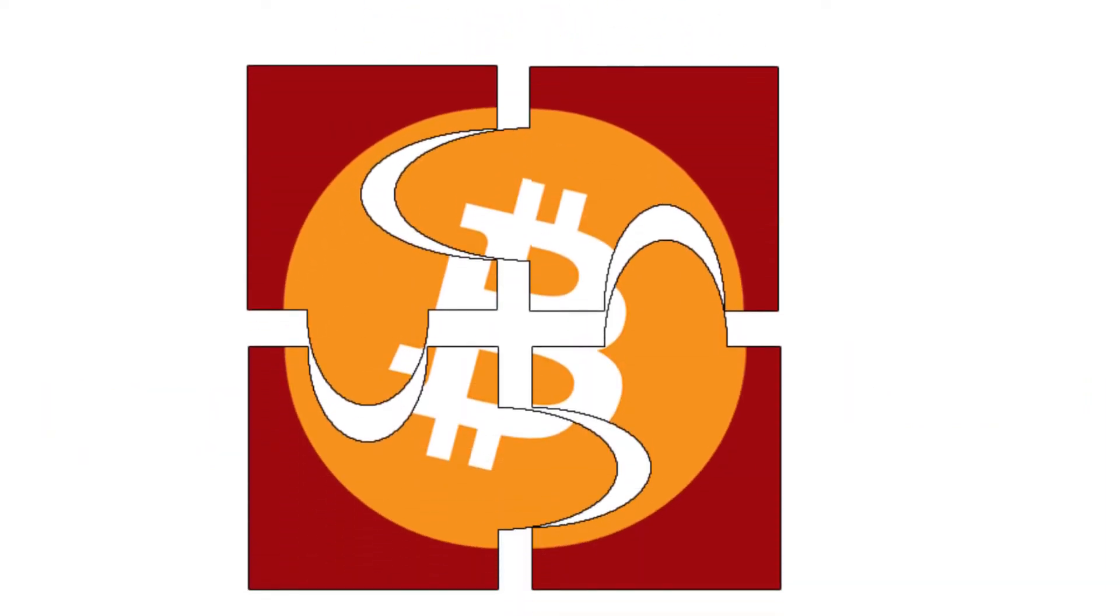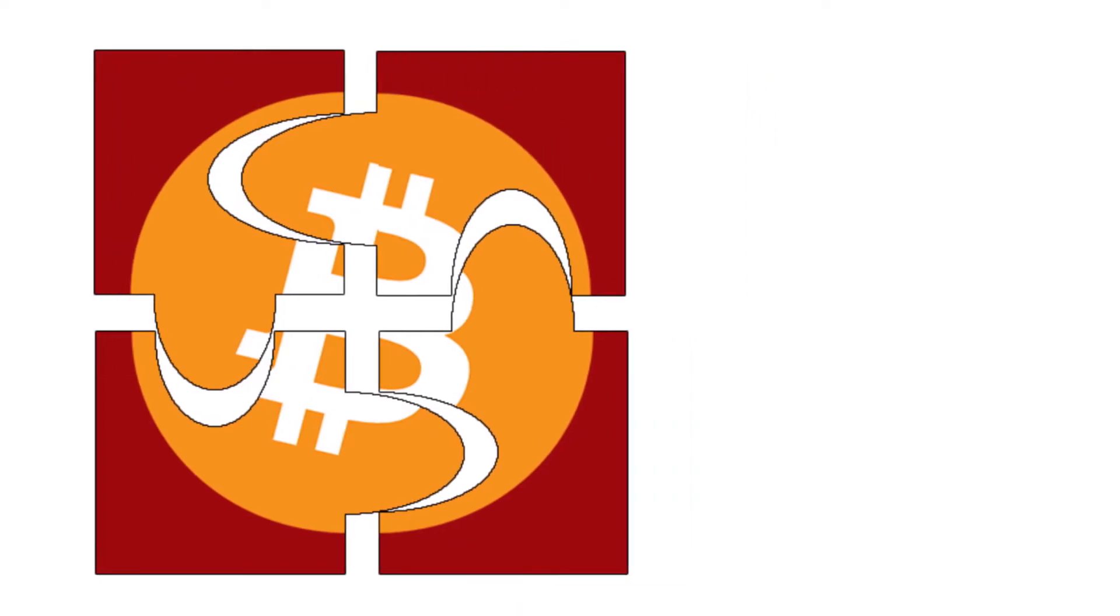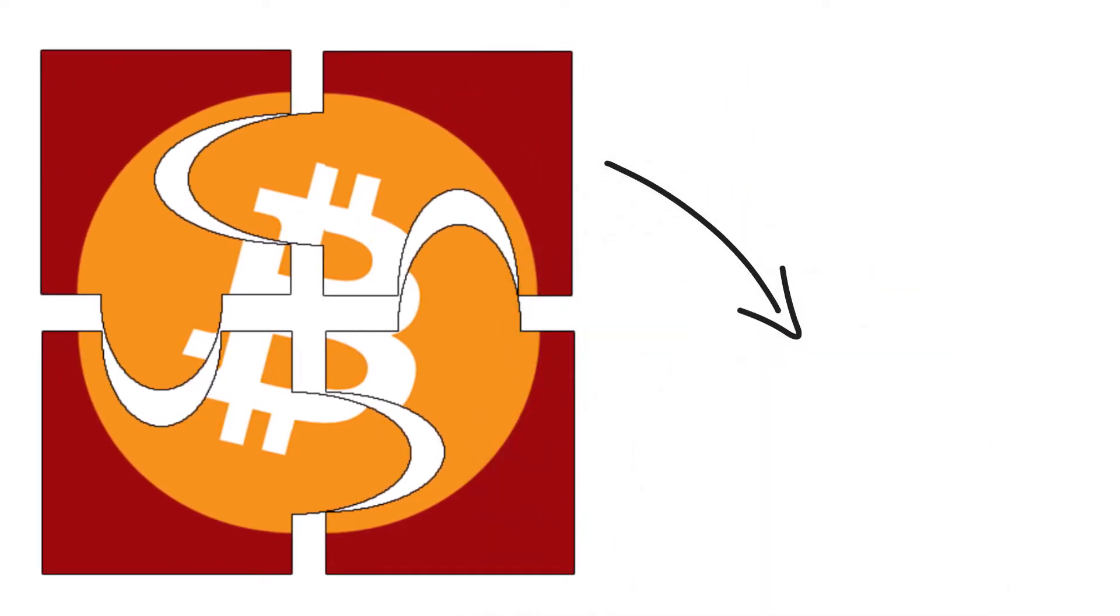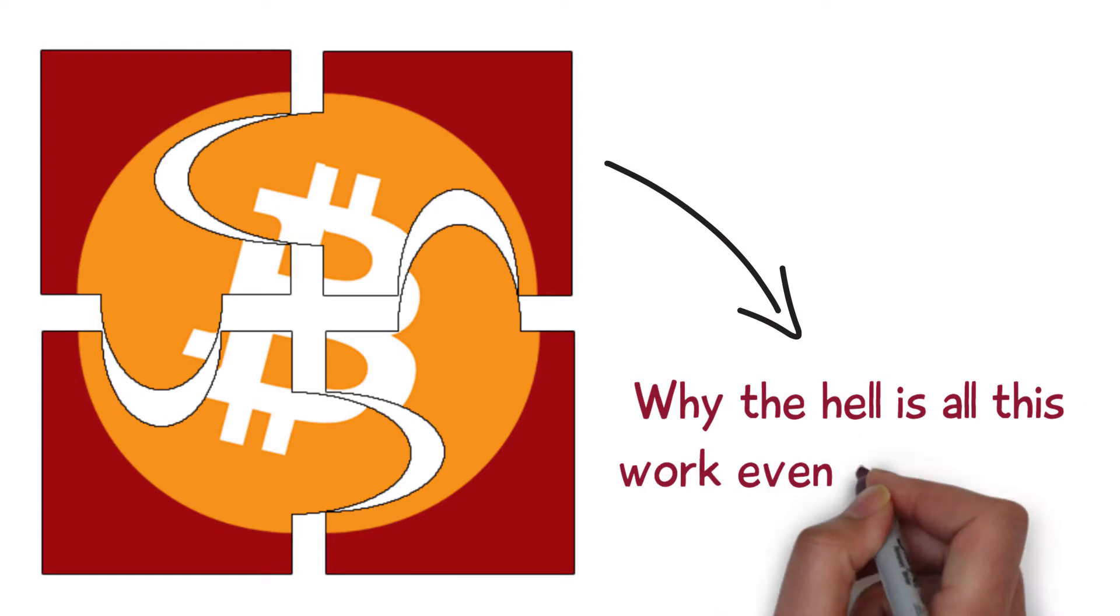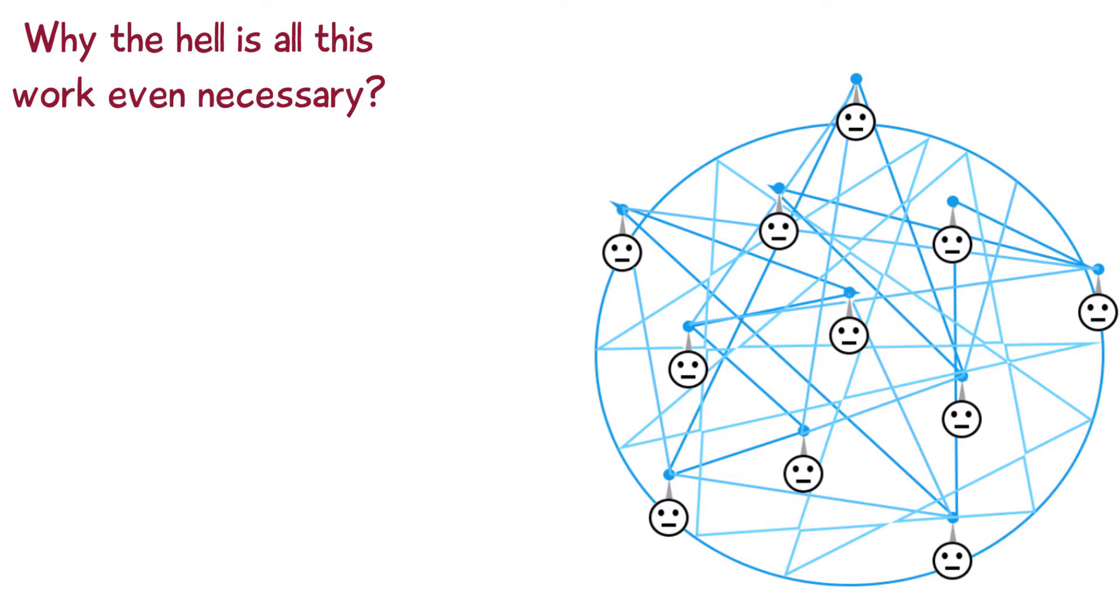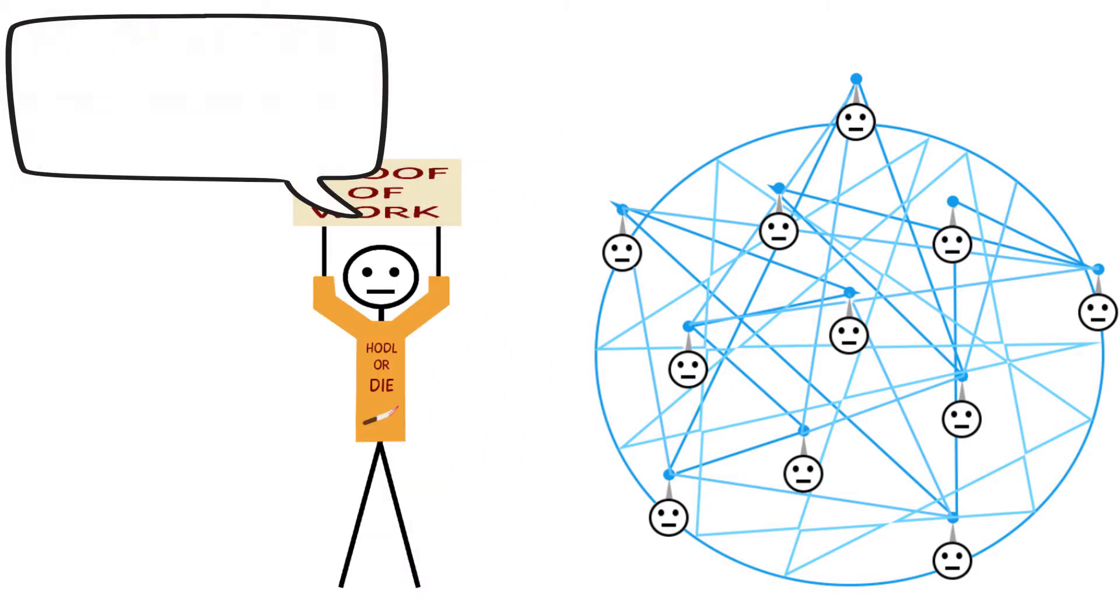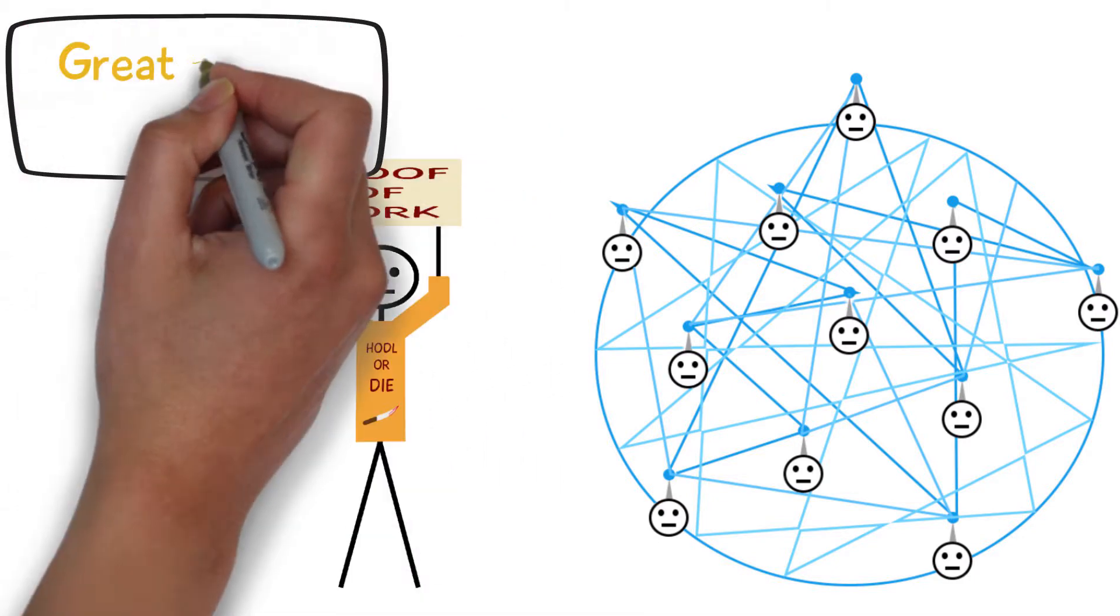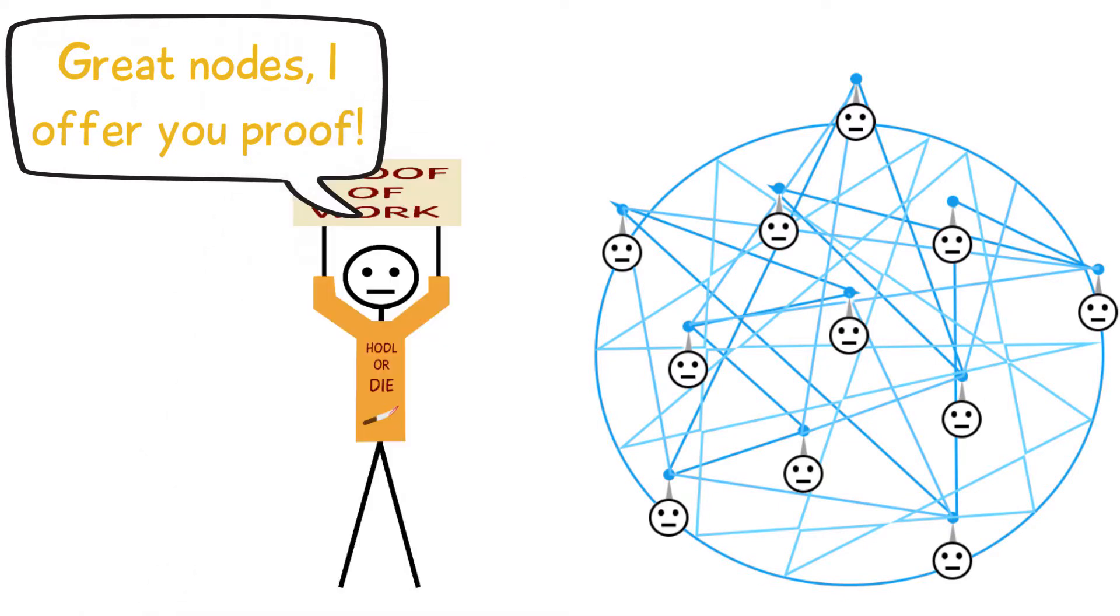Last episode we had a look at the puzzle that needs to be solved in order to create a block. So why is all this work even necessary? It comes down to having to show the network that you've put in the work and effort of creating a block in a way that cannot be bypassed or cheated. This process is called proof of work. This proof of work is essential to ensure the security of the blockchain.